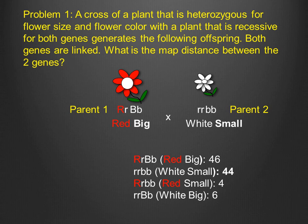To do this, we must first identify the recombinant offspring. Remember that because crossing over occurs at a relatively low frequency, the parental offspring outnumber the recombinant offspring.